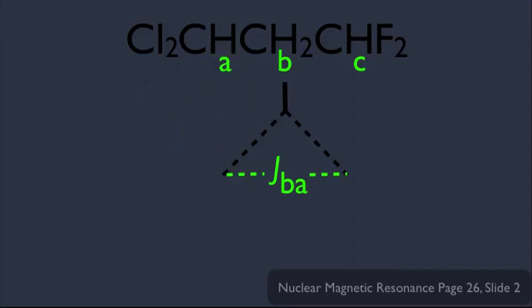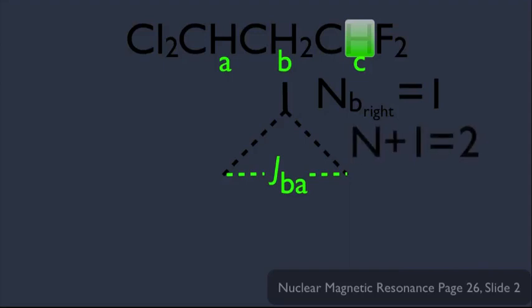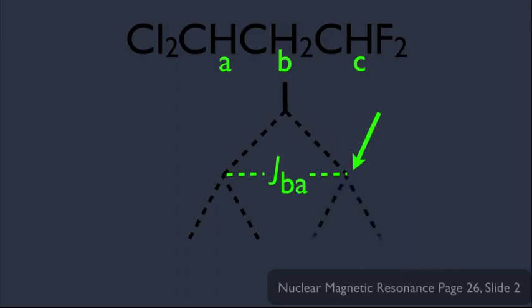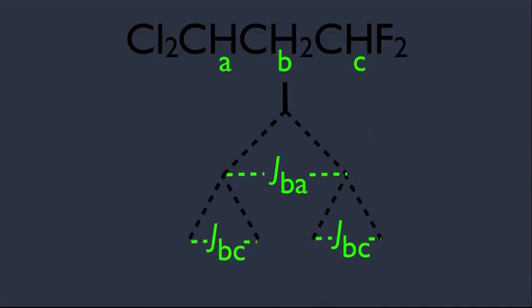Now let's focus on the right side. What is the n value for the B hydrogen on just the right? He only has the C hydrogen as a neighbor, so n equals 1. Applying the n+1 rule, n+1 equals 2, so C would split B into two peaks — a doublet. Each of the two signals from the left-side split is now further split into a doublet, with the distance labeled as JBC.